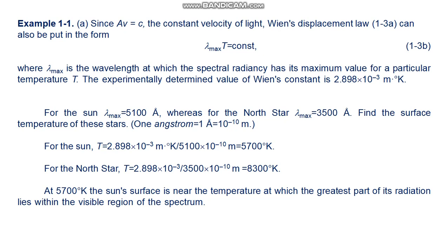For the sun: T = (1.898 × 10^-3 m·K) / (5500 × 10^-10 m) ≈ 5700 K. The sun's surface is near the temperature at which the greatest part of its radiation lies within the visible region of the spectrum. This suggests that over the ages of human evolution, our eyes have adapted to the sun and become most sensitive to the wavelengths it radiates most intensively.